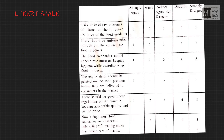For example, this table on screen shows items in a Likert scale used to measure opinions on food products. Sample statements include: 'If the price of raw materials falls, firms too should reduce the price of food products.' The researcher, researching from the point of view of the food product producer, has assigned 1 on strongly agree, where 1 means greater connectivity. It all depends upon the researcher what kind of scoring scale to use — 1 to 5 or 5 to 1.